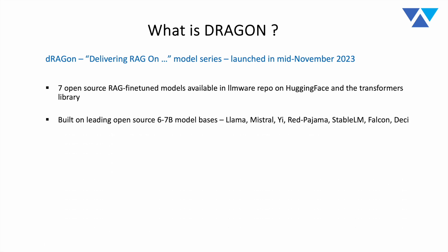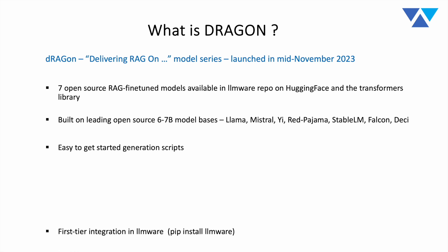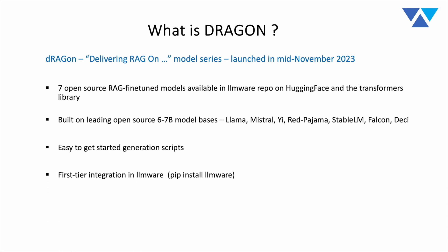They're built on the leading open source commercially licensed model foundations — both 6 billion and 7 billion parameter models: Llama, Mistral, Yi, Red Pajama, Stable LM, Falcon, and Deci. They all include easy-to-get-started generation scripts with first-tier integration into LLMware. We'll explain in follow-up videos some really cool use cases and things you're able to do with these models when you bring them together with LLMware.